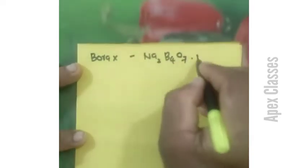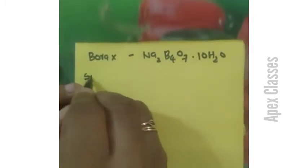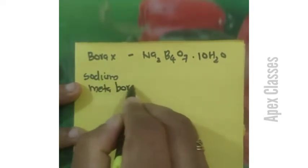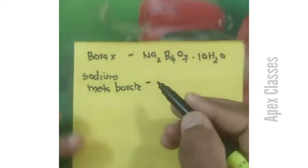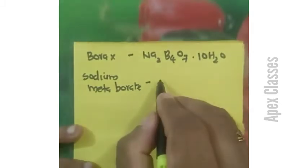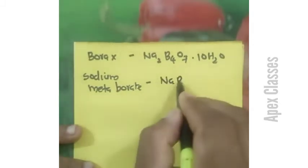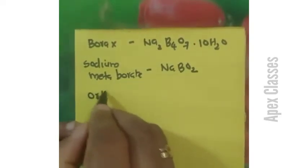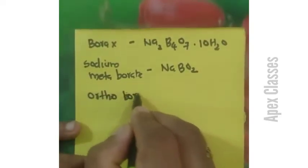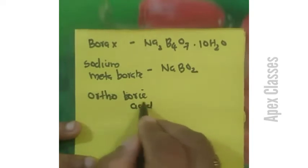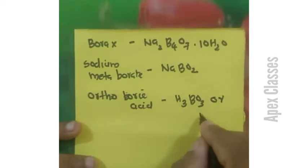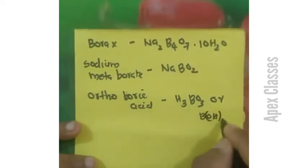Borax is Na2B4O7·nH2O. Sodium Metaborate is NaBO2. Orthoboric Acid is H3BO3, or B(OH)3.